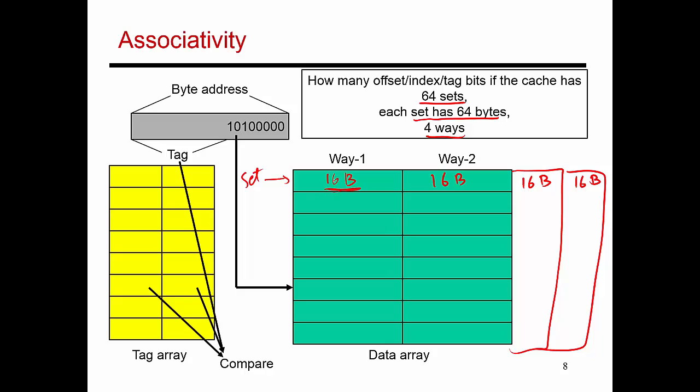Since a block is 16 bytes in size, I'm going to need four bits for my offset. I'm going to need as many index bits as the number of sets that I have. In this case, I have 64 sets. So, that means I need six bits for my index. And everything else in my 32-bit address is going to be my tag. In this case, 32 minus 4 minus 6 gives me a 22-bit tag.